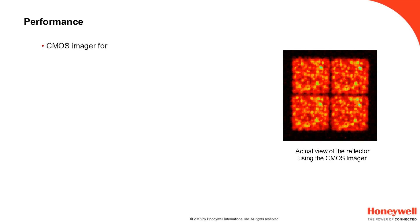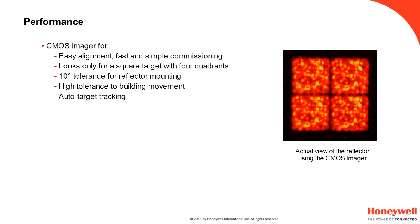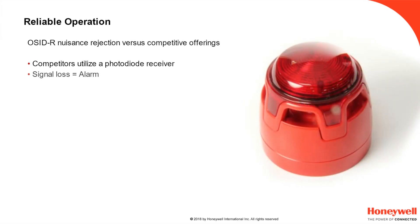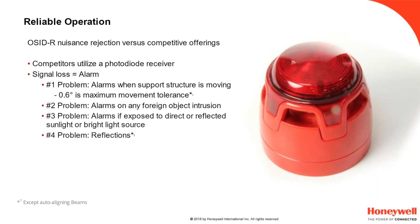One of the keys to the OSID R's performance is its use of a CMOS imager rather than the traditional photo receiver. A photo receiver has an effective resolution of 1x1 pixel. The CMOS imager has many thousands of pixels and produces an image of the field of view seen by the device, which the software can interrogate and interpret. The interpretation allows the simple alignment process and supports the tolerance to alignment issues, building movement and false alarms caused by sunlight or intrusion. The photodiode used by the competition will false alarm when building movement exceeds a small tolerance, if any foreign object interferes with the beam, and if bright sunlight or reflections hit the beam or reflector.